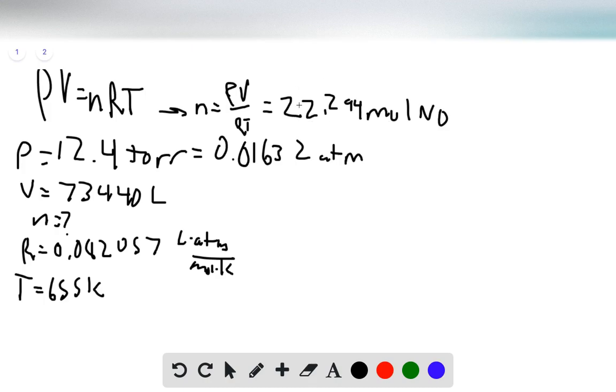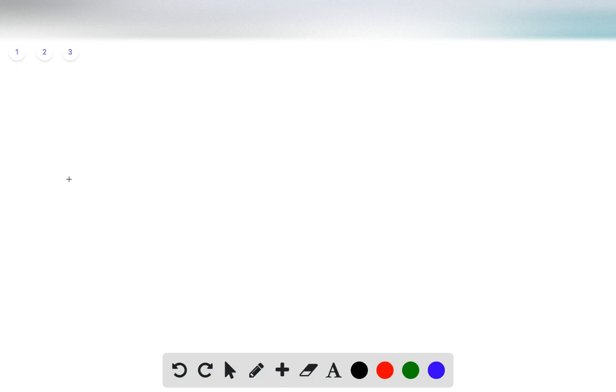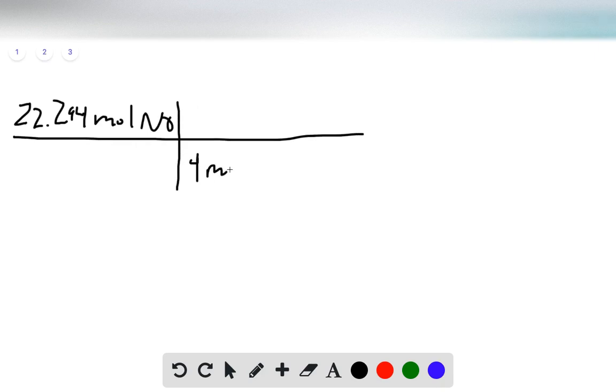Since we have this many moles of NO, we can convert that into moles of urea and then into grams of urea. We have 22.294 moles of NO. We have 4 moles of NO per 2 moles of urea, CO(NH2)2.